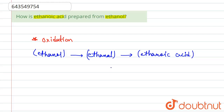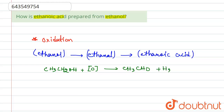Now let me write the reactions. Step 1: CH₃CH₂OH + [O] (nascent oxygen) → CH₃CHO + H₂O. So ethanol is oxidized to ethanal. Moving to the second step: CH₃CHO + [O] (nascent oxygen) →